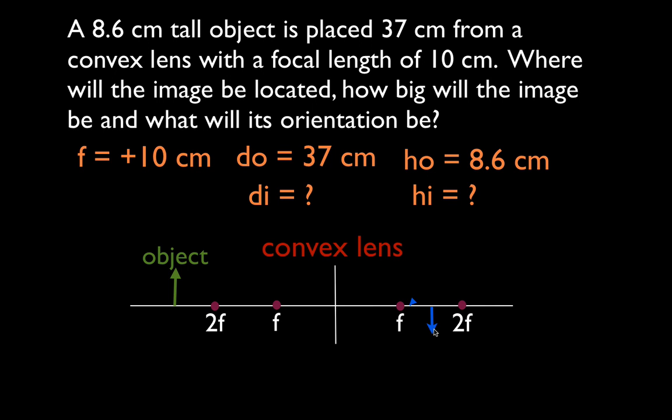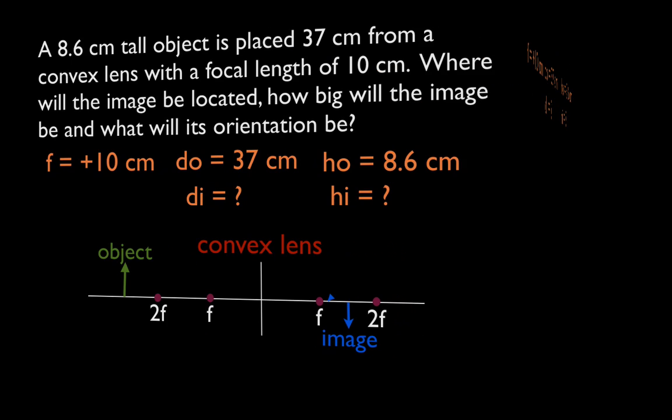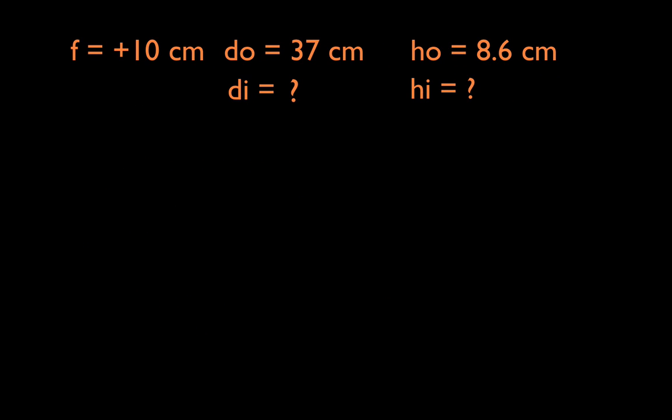Okay so let's go ahead and let's do the calculations. Okay so once again here's all the information. We want to find the di, we're going to do the di first. We're going to do that with the thin lens equation. The thin lens equation is 1 over f equals 1 over do plus 1 over di, and we want to solve for di so we're going to switch some things around here. We're going to subtract 1 over do from both sides. We get that 1 over di is equal to 1 over f minus 1 over do.